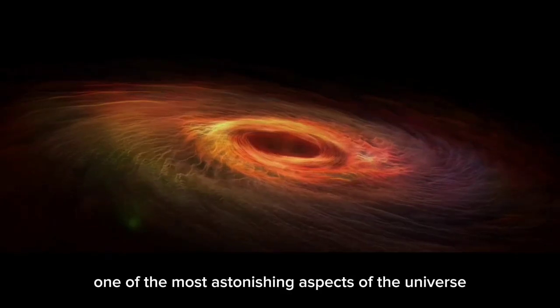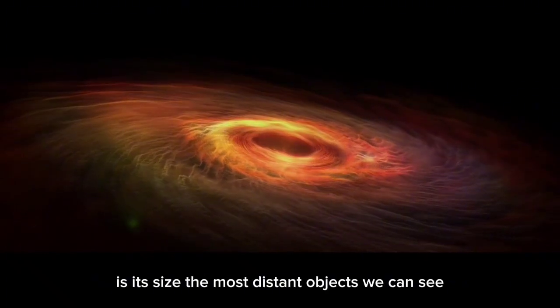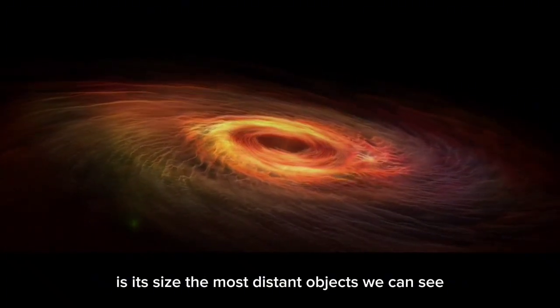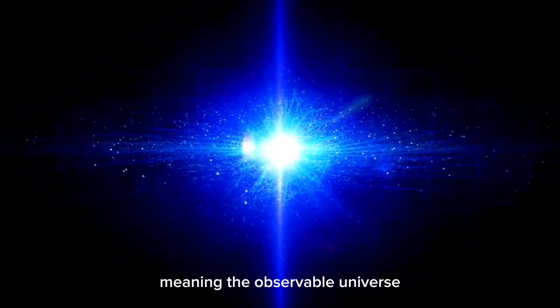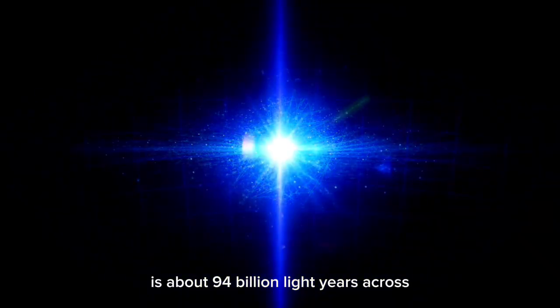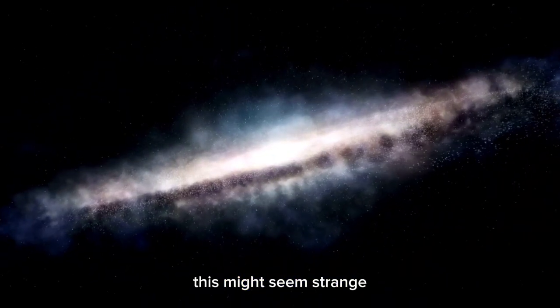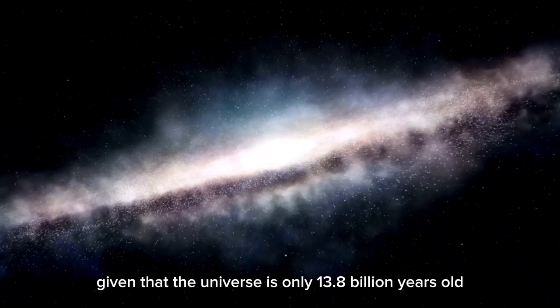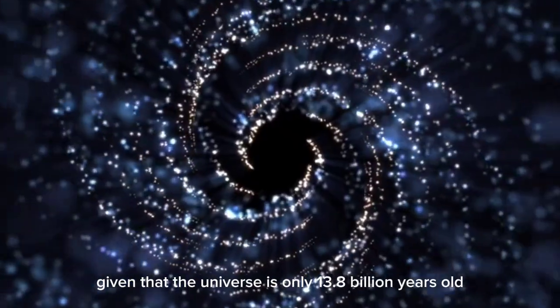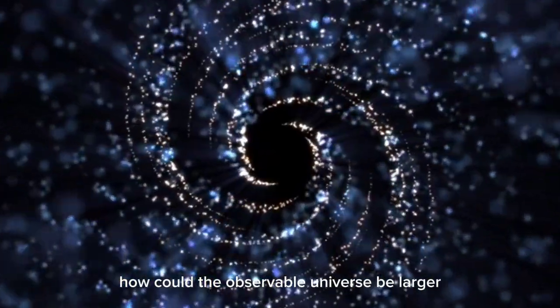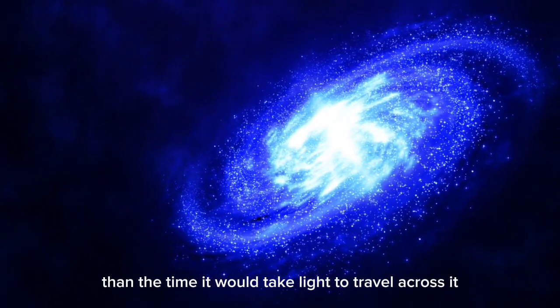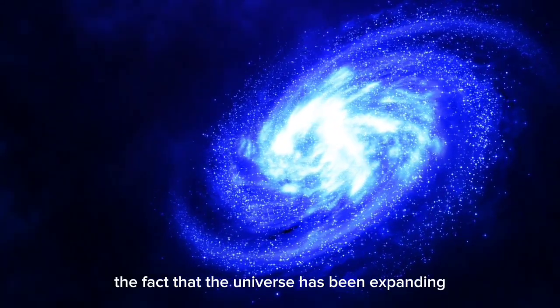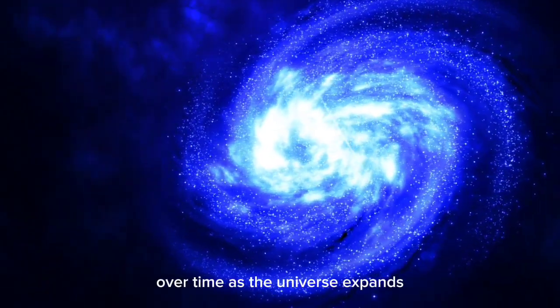One of the most astonishing aspects of the universe is its size. The most distant objects we can see are around 47 billion light-years away, meaning the observable universe is about 94 billion light-years across. This might seem strange given that the universe is only 13.8 billion years old. How could the observable universe be larger than the time it would take light to travel across it? The answer lies in the fact that the universe has been expanding over time.